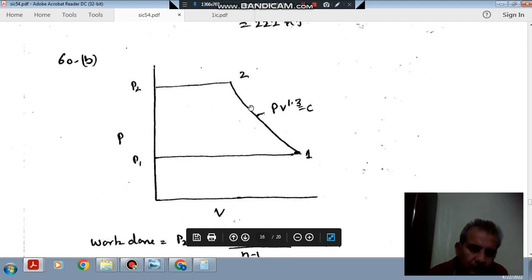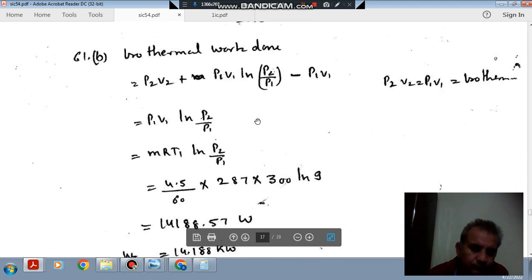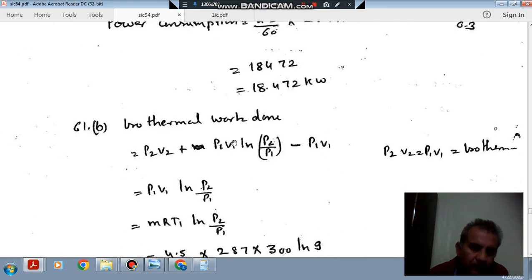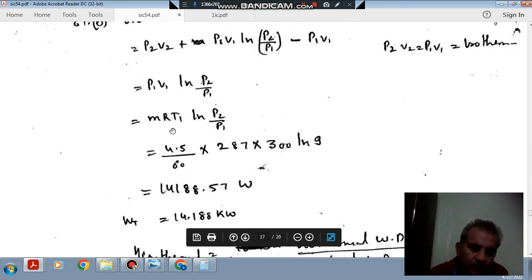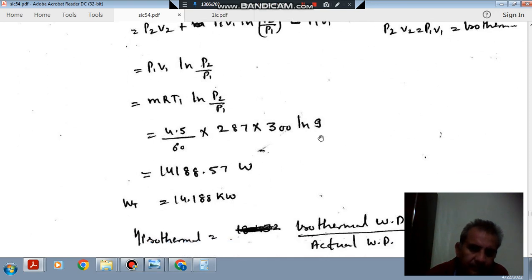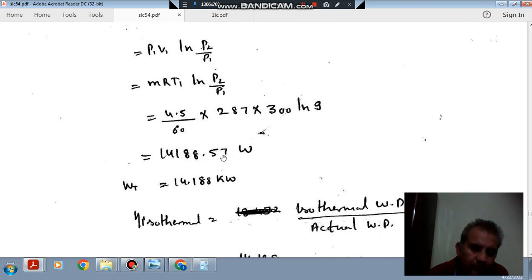Now when isothermal work is done, then this process will remain same, but this process will be replaced by isothermal. Isothermal work will be 2.303 MRT1 log(P2 by P1). It will be 14,188.57 Watt or 14.188 kW.